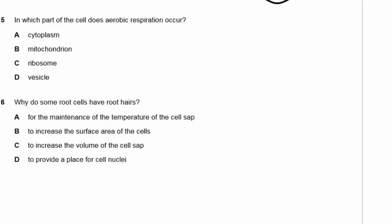Question 5: In which part of the cell does aerobic respiration occur — cytoplasm, mitochondrion, ribosomes, or vesicles? Ribosomes are for making proteins, vesicles are for transportation. While mitochondria are located inside the cytoplasm, that's not specific enough. It's specifically in the mitochondria that aerobic respiration takes place, with all the proteins on the folded membranes inside the mitochondria.